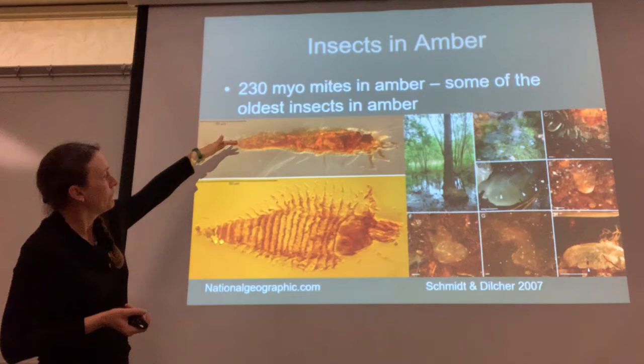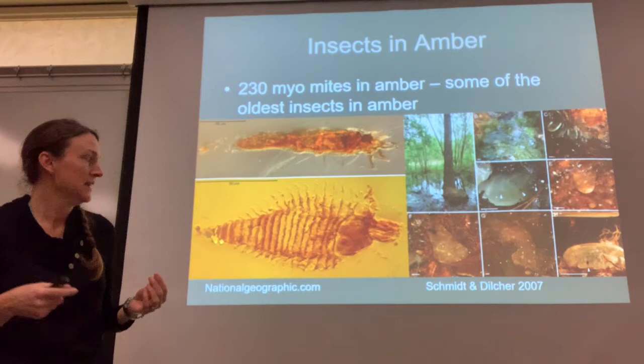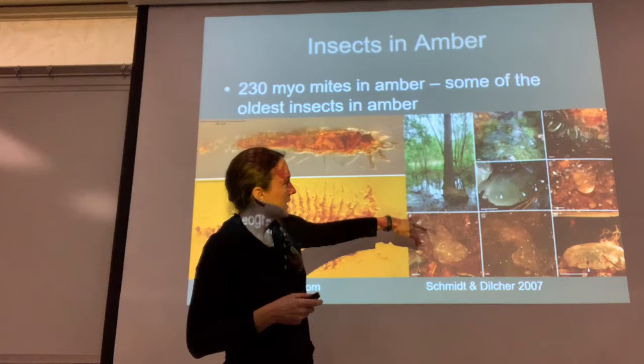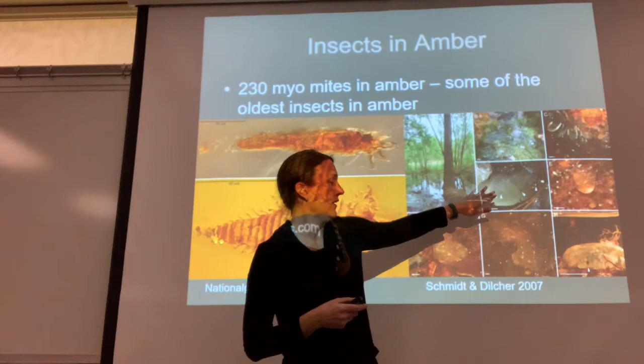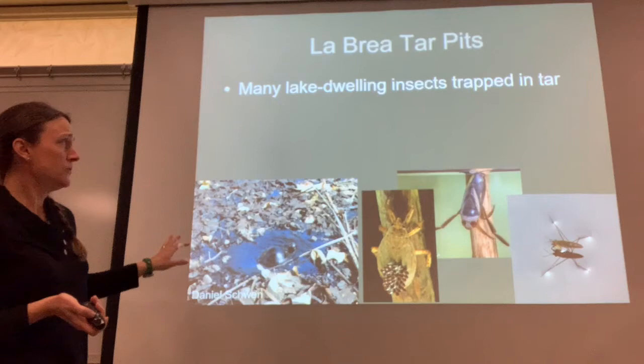Here are some 230-million-year-old mites that were found in amber. Some of the oldest insects are from amber deposits. For a long time people thought that wouldn't work for aquatic organisms, but it actually does. A 2007 study showed that in swamps we get cool bulges of resin underwater from swampy trees, so we can get a lot of aquatic organisms out of these resin deposits from ancient swamps.